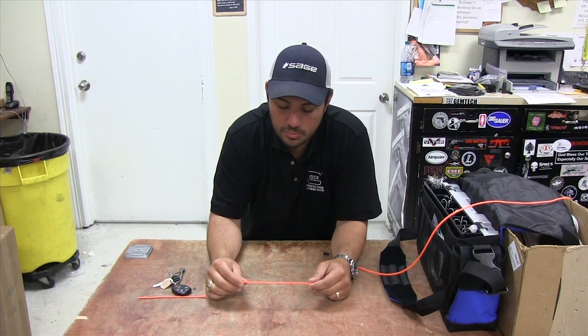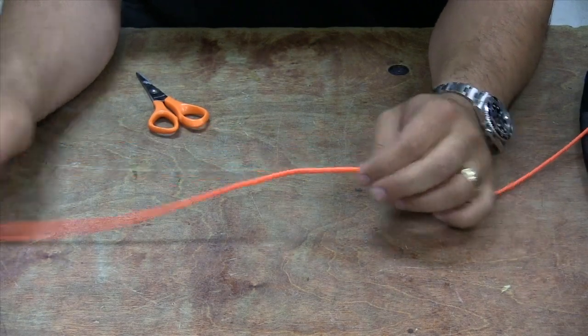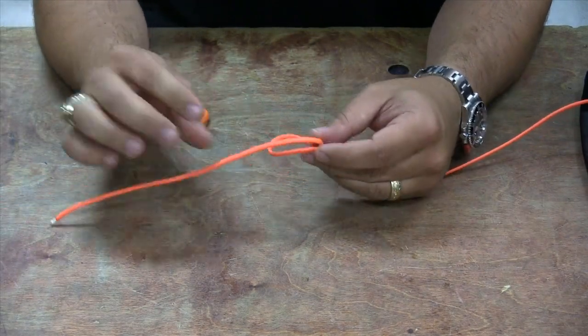So we're going to use this orange 550 cord to give you a better look at what we're doing. What you're going to want to do guys is take about 8 or 10 inches of line and you're going to tie a double overhand knot. You're going to make a loop,